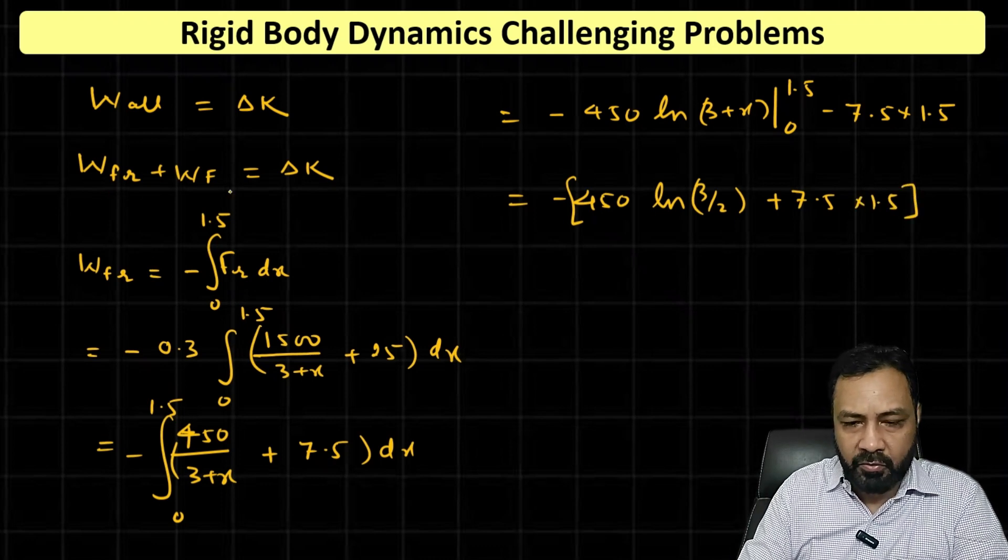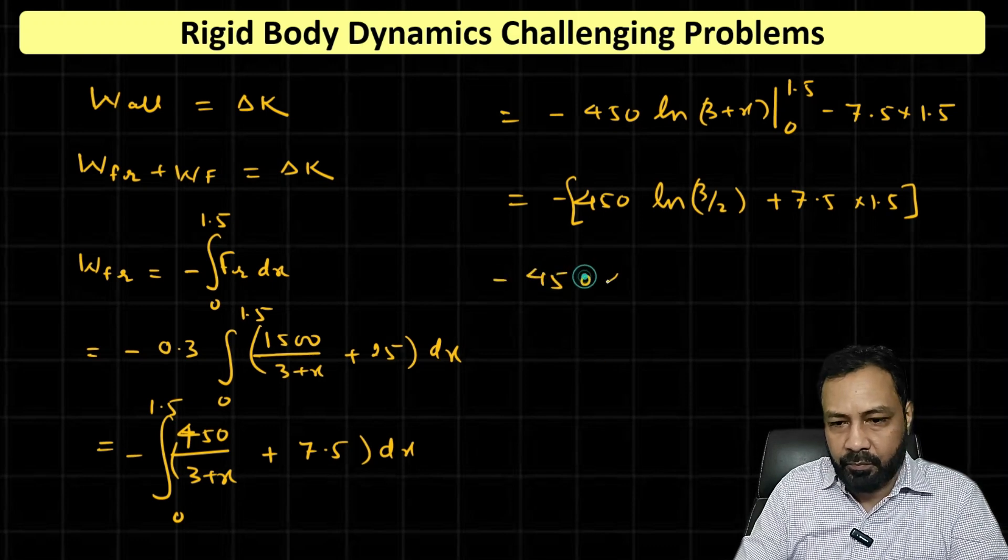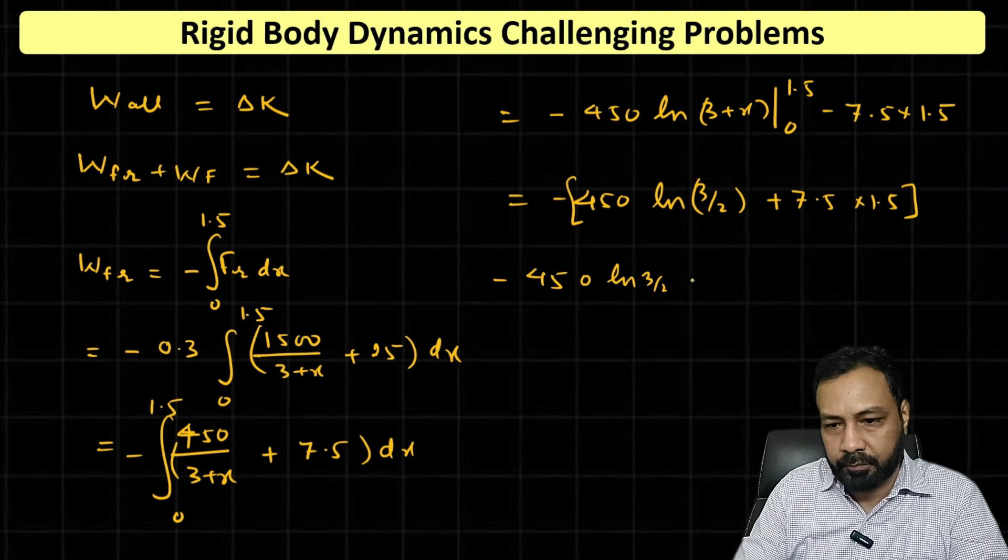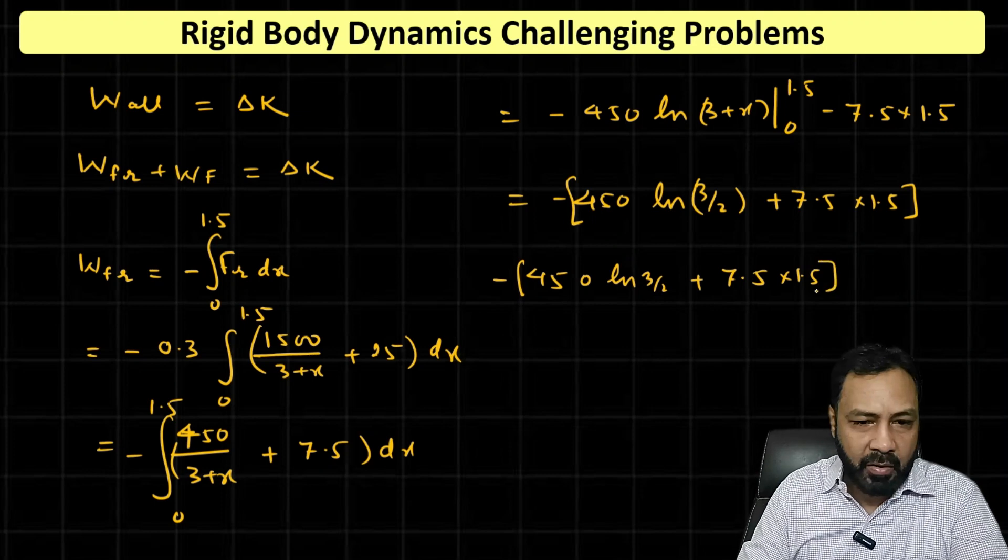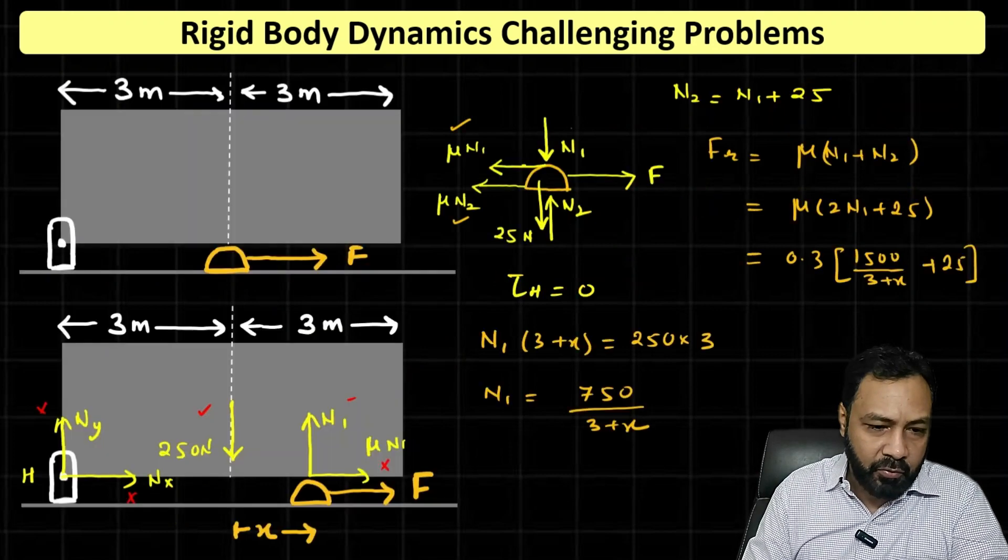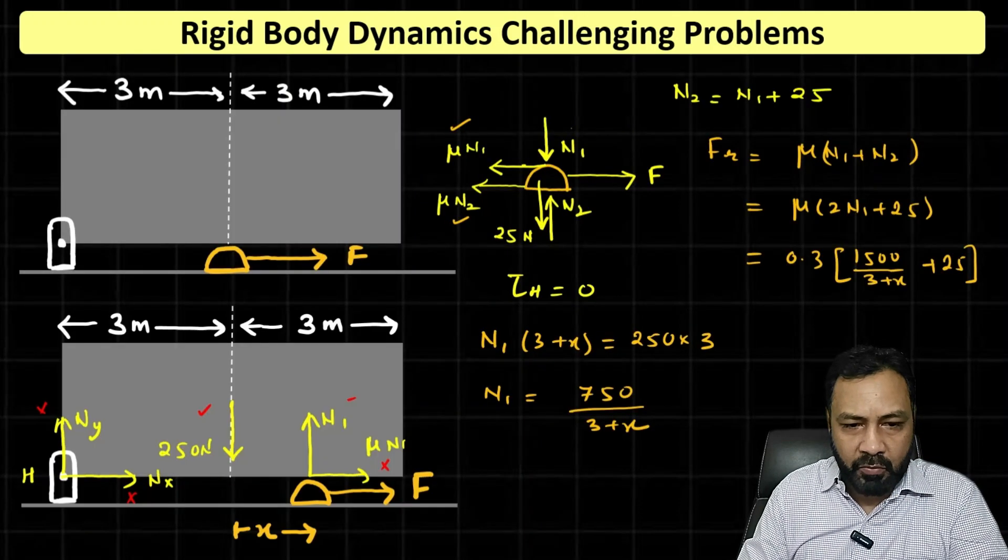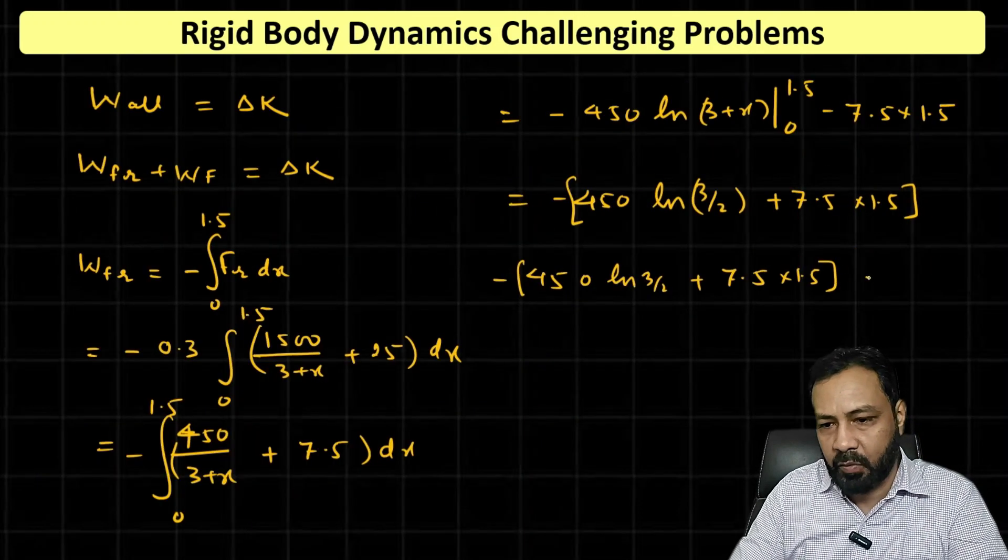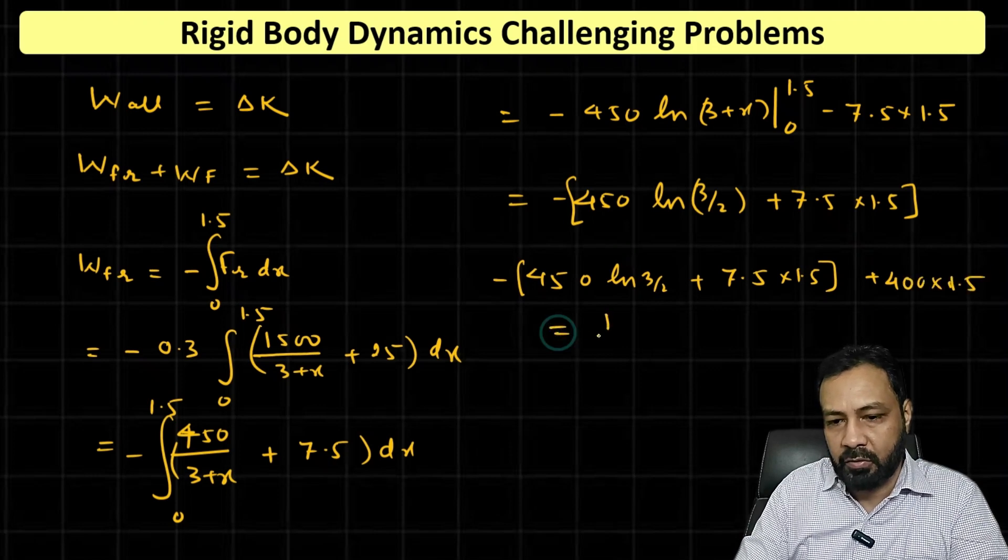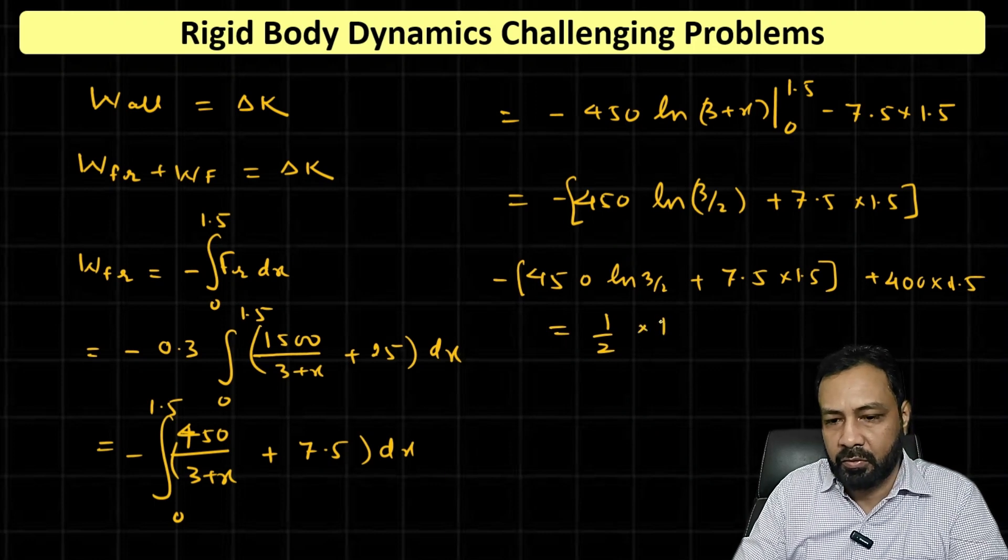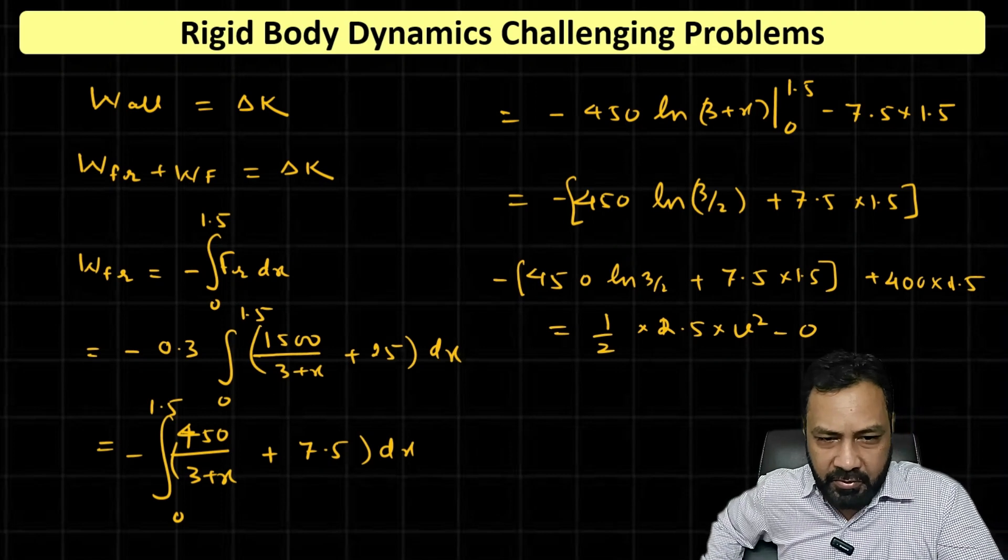Now apply the work-energy theorem. Work done by friction, we've got minus 450 ln(3 by 2) plus 7.5 into 1.5. The F, the magnitude of F is 400 Newtons. So work done by F is 400 into 1.5, and this equals half, change in kinetic energy, half into 2.5 into V squared minus 0. Put the value, we'll get the answer.